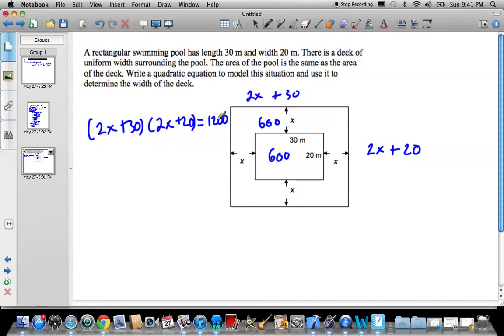So let's do a little bit of math on this guy. So let's go 4x squared, outside, inside, 60x, and then 40x plus 600 equals 1,200. So I'm going to have 4x squared plus 100x minus 600 equals 0. So again, this is just a quadratic formula.